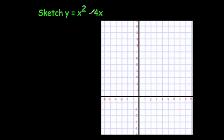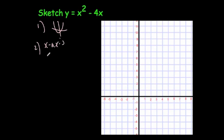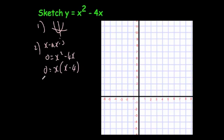Next, we're going to draw the graph y equals x squared minus 4x. Again, it's an x squared graph, so it's going to be a U-shaped parabola. To find where it crosses the x-axis, you let y equals 0, giving 0 equals x squared minus 4x. Factorizing, you take x out as a common factor: x(x − 4). That means x equals 0 or x equals 4, so the coordinates are (0, 0) — the origin — and (4, 0).